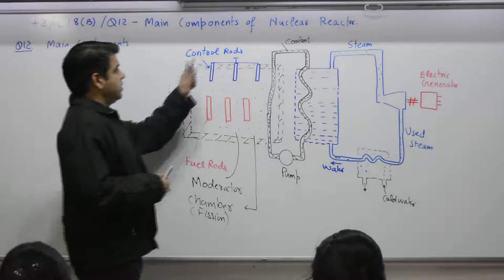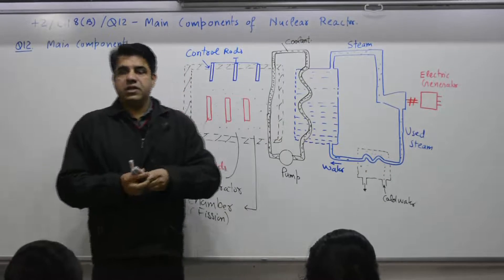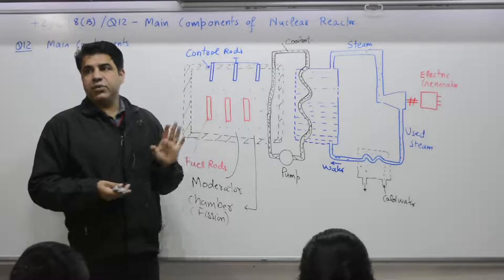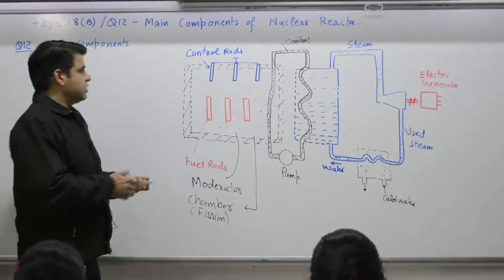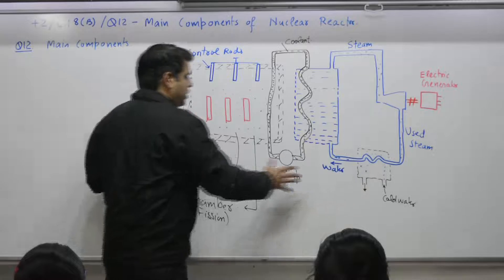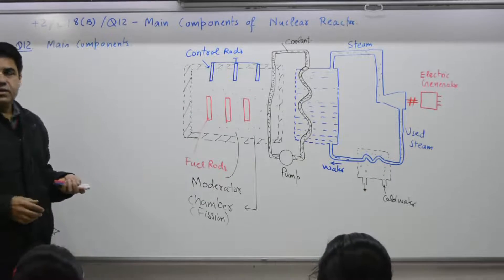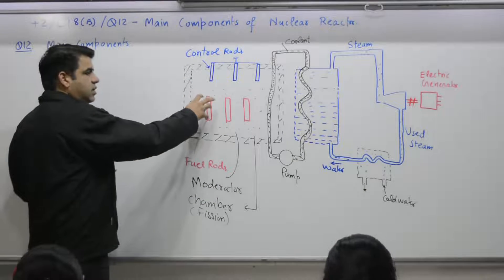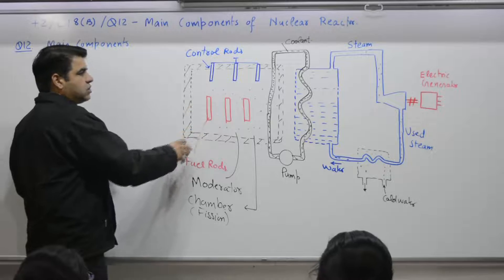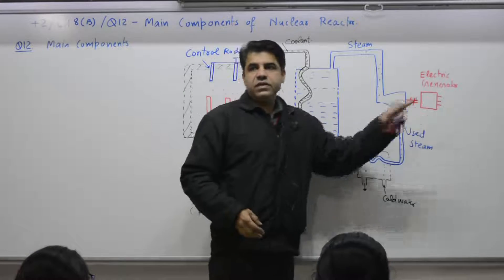Question number 12 deals with nuclear reactor, that is construction and its main components. So this is the total nuclear power plant starting from the use of the rods, that is fuel rods, till generation of electricity.